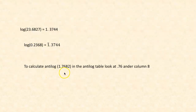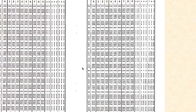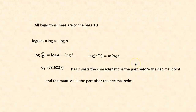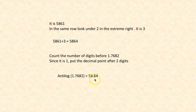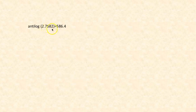To calculate the antilog of 1.7682, in the antilog table we look at 76 under column 8, which gives 5861, and under mean difference 2 it gives 3. So 5861 plus 3 gives 5864. For the decimal point placement, the characteristic is 1, so 1 plus 1 is 2 — we place the decimal point after 2 digits. Therefore antilog of 1.7682 is 58.64, and antilog of 2.7682 would be 586.4, placing the decimal point after 3 digits.